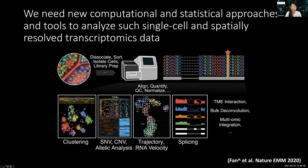One of these spatially resolved transcriptomic profiling techniques is MERFISH, or Multiplexed Error-Robust Fluorescence In Situ Hybridization, developed in my postdoc lab with Dr. Xiaowei Zhuang. I recommend the Chen et al. paper in Science from 2015. Broadly, MERFISH uses combinatorial labeling and error-robust barcoding along with sequential imaging to image targeted RNA species within cultured or fixed cells and fixed tissues.